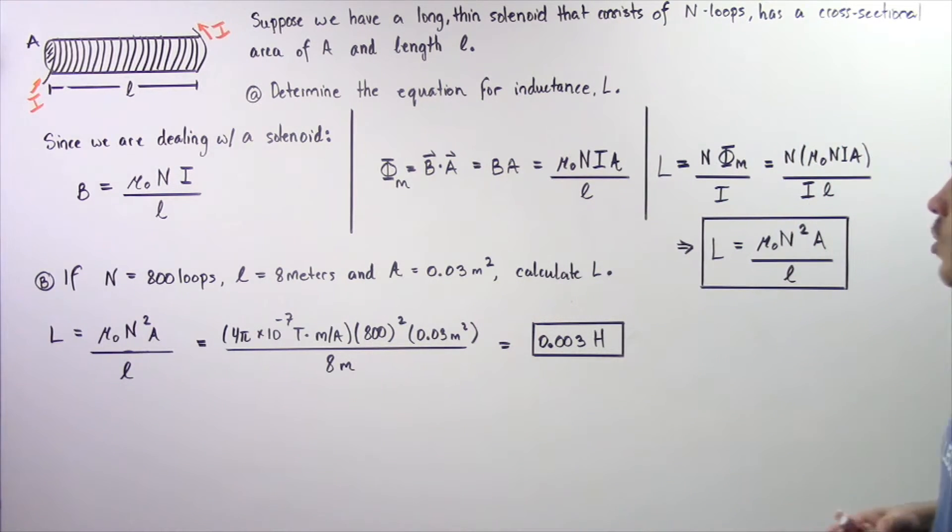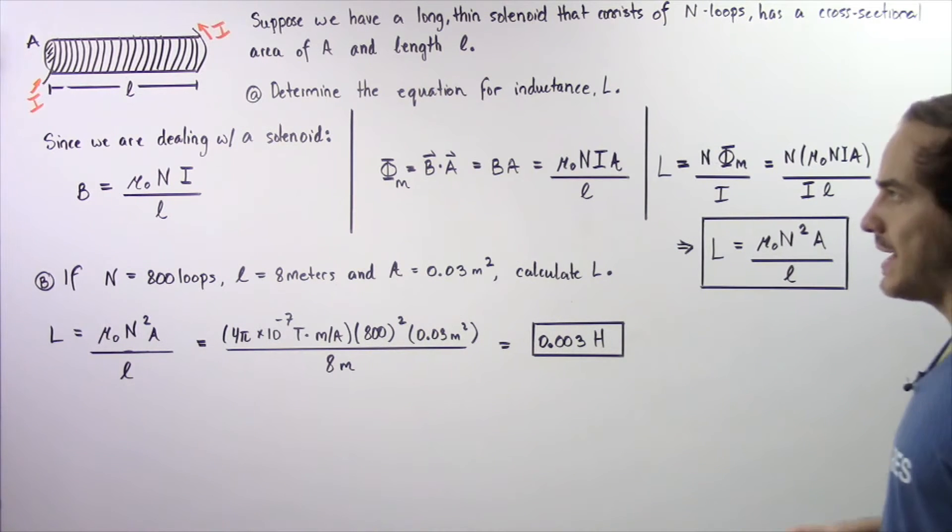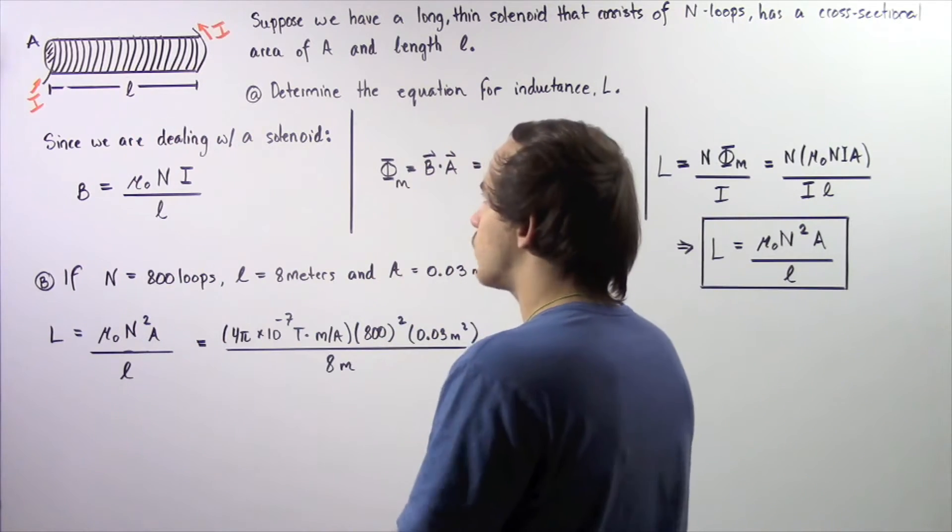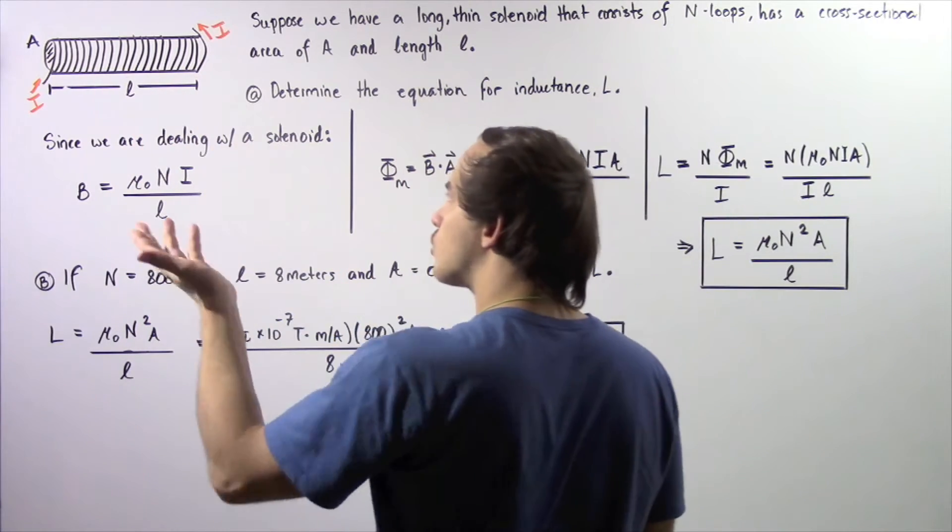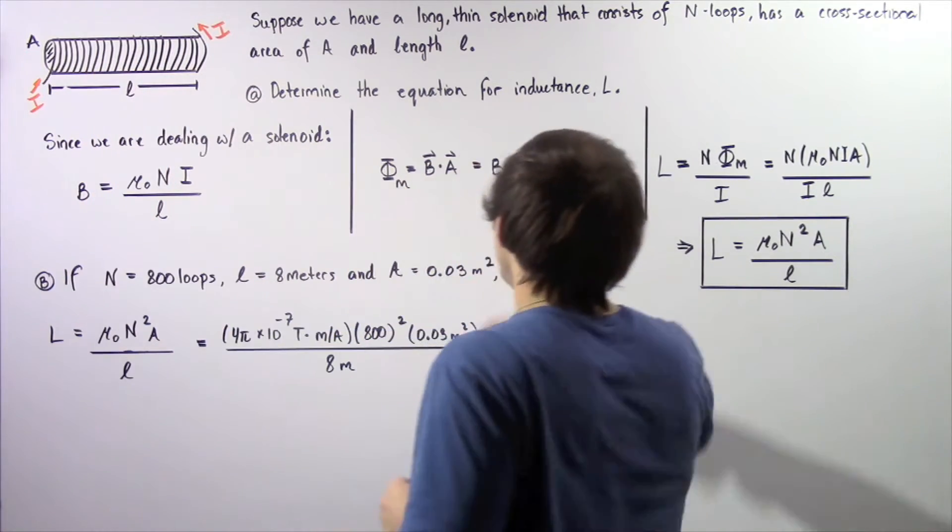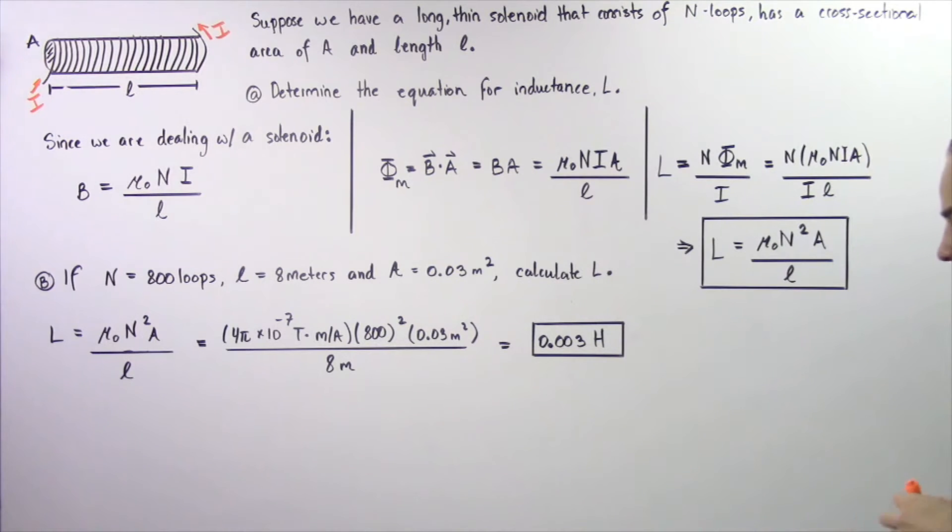Suppose we have a long thin solenoid that consists of N number of loops of conducting wire, has a cross-sectional area given by A, and has a length given by L as described in the following diagram. So we have a solenoid, the cross-sectional area is A, the length is L, and the number of loops of wire is given by uppercase N.